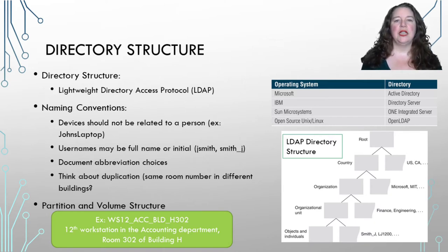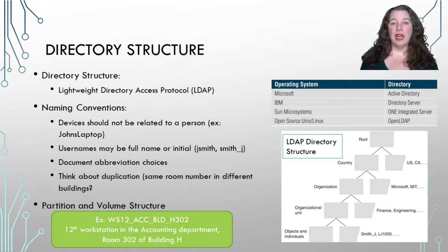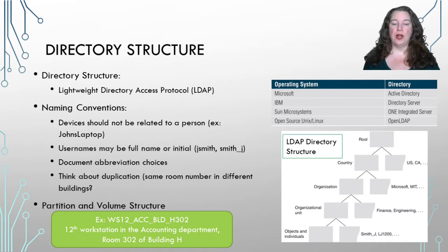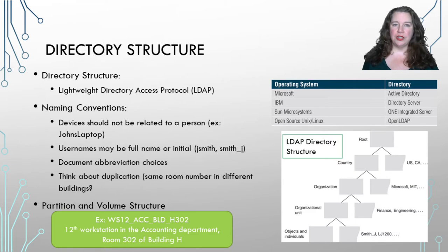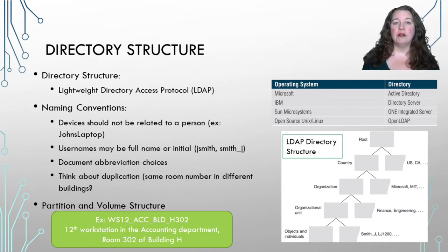The basic LDAP structure starts at the root, then breaks down into country, organization, organizational unit, and all the way down to objects. You also want to think about how you're going to partition your drives or volumes, and whether you're using RAID or basic hard drives. For example, a workstation in the accounting department in building H, room 302 — if you just had '302,' what if building J also has a 302 in accounting? Different abbreviations need to be documented, understood, and used consistently throughout your system.